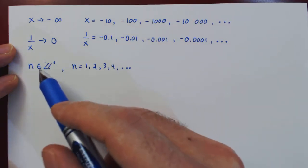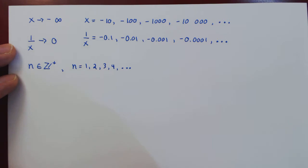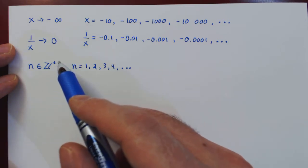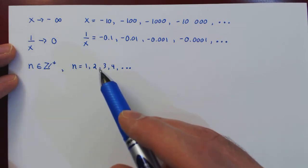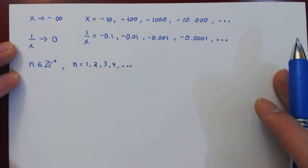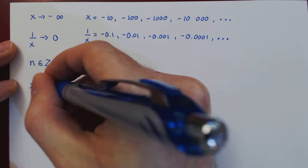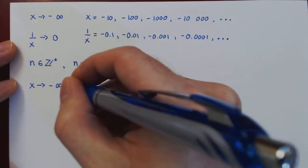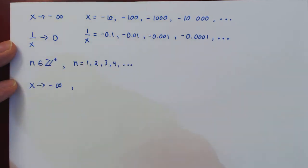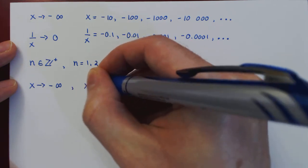So the integer set contains all whole numbers, all integers, and the positive sign means we only take the positive whole numbers. So if x goes to negative infinity, then what about an even power of x, x to the 2n?